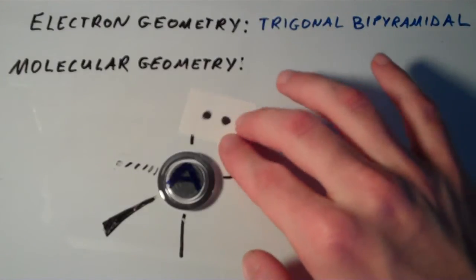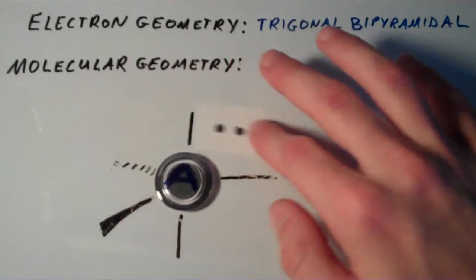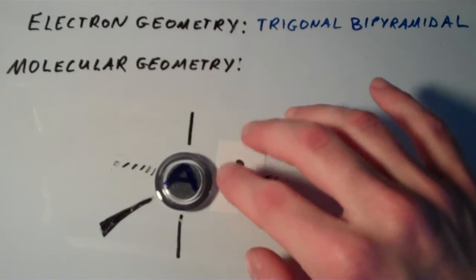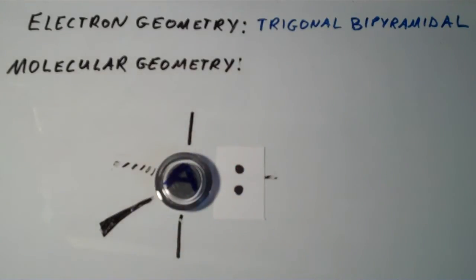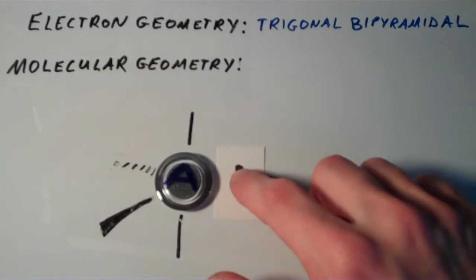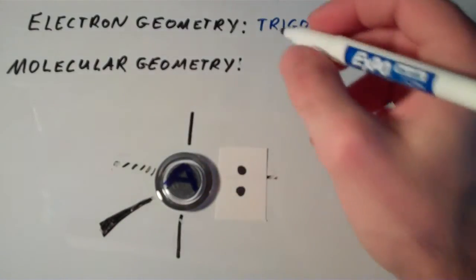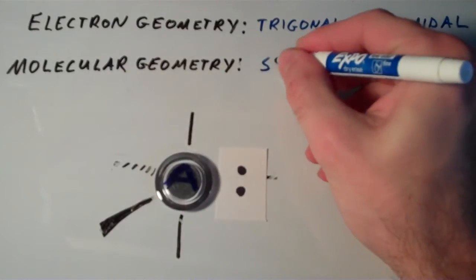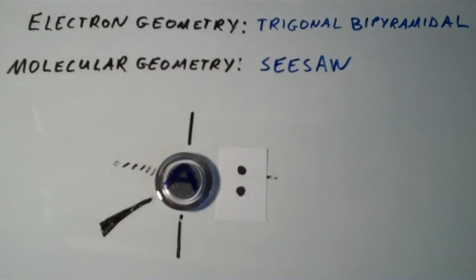If we were to put it up here in the axial position, we'd have three of these 90-degree repulsions. But when we put it here in the equatorial position, we only have two of these 90-degree unfavorable repulsions. So the lone pair is going to go here in the equatorial spot, either here, here, or here. This molecular geometry is what we call seesaw. Five electron groups, one lone pair.